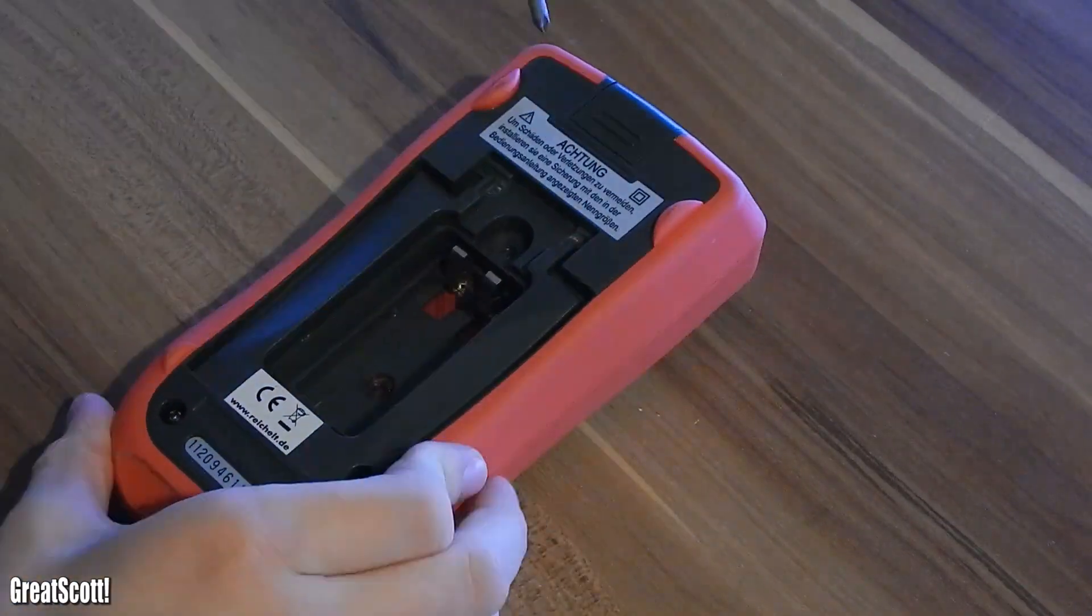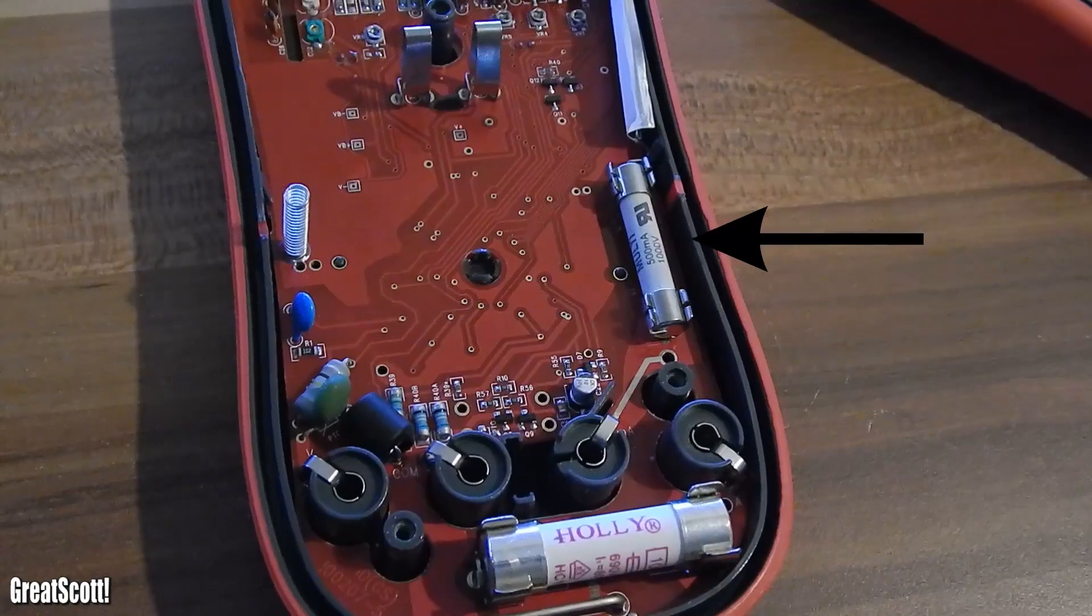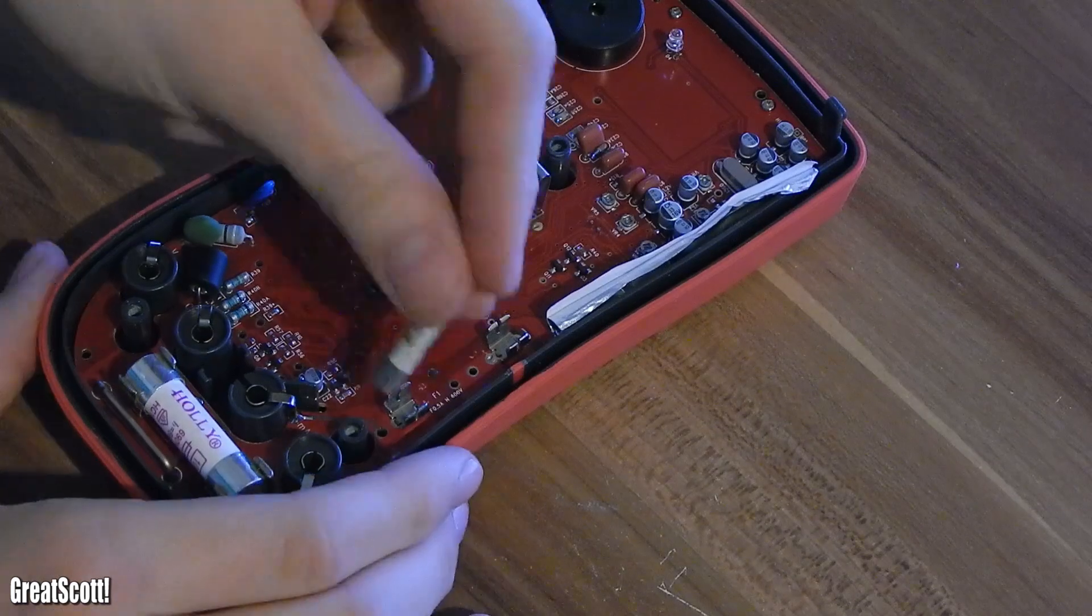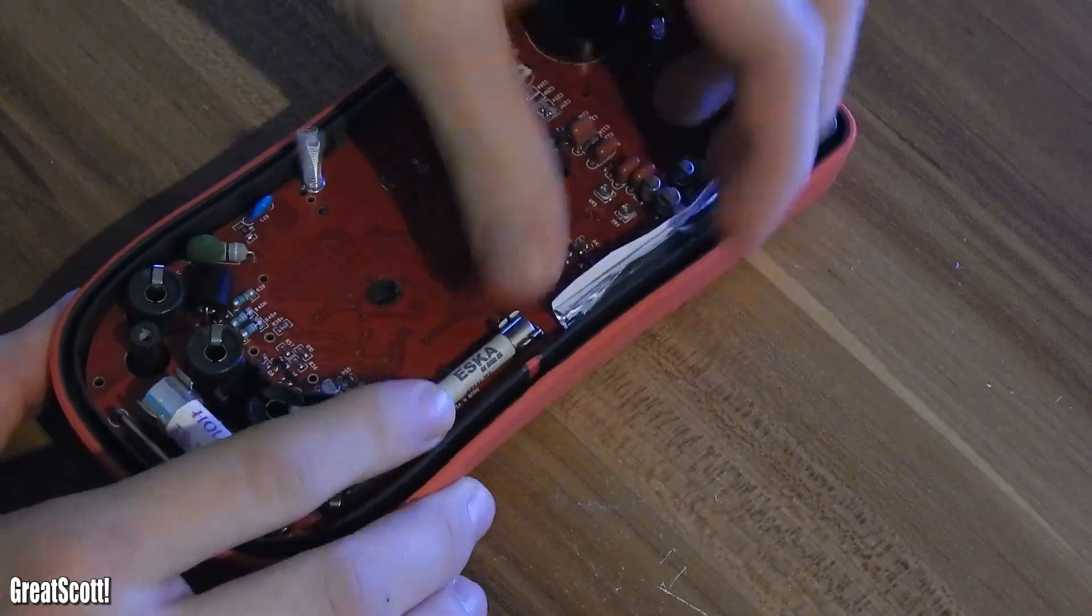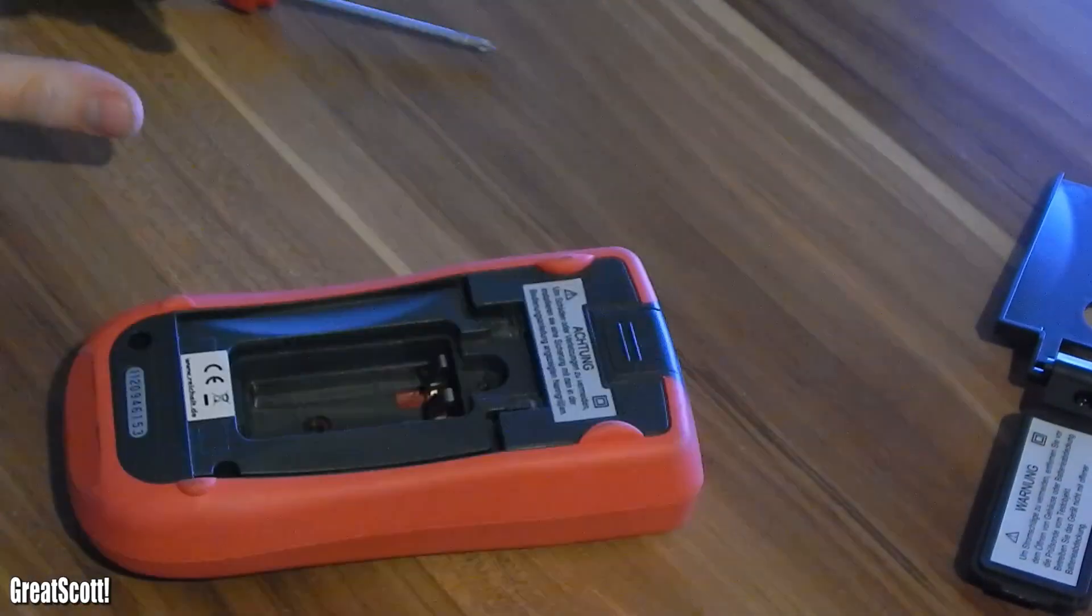Unscrew your multimeter and locate the smaller fuse. Buy yourself the right one with the same values and replace it. Screw everything back together and you are done.